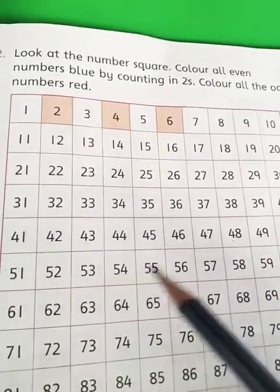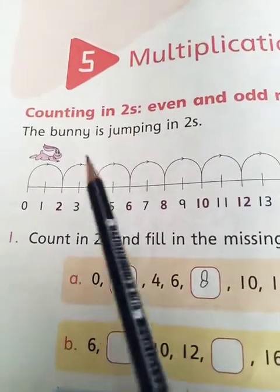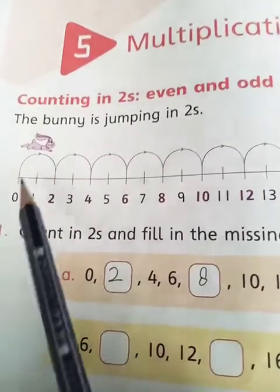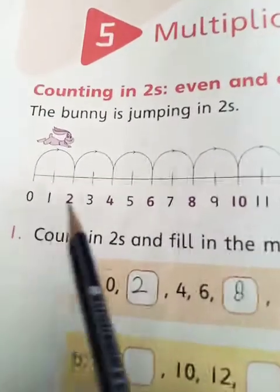Now what are even numbers and what are odd numbers? Remember we have studied this in which we have jumped 2s. So the numbers which we get at jumping 2s from 0, all these numbers are called even numbers.